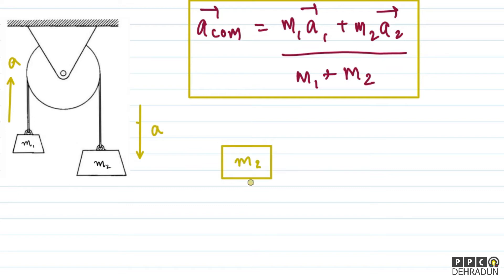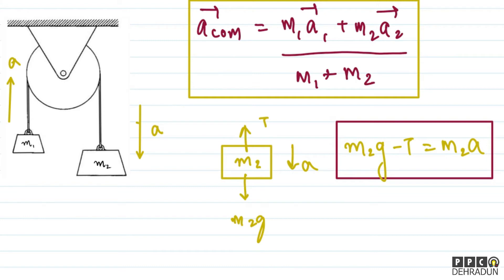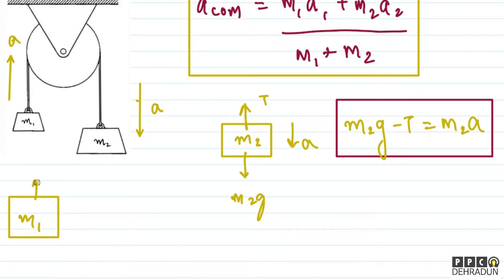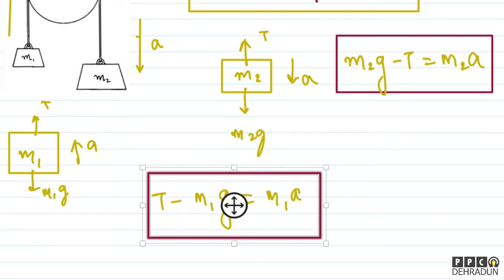First, let's draw the free body diagram. For M2, tension acts upward and M2g acts downward, and acceleration is downward. So the equation becomes: M2g minus tension is equal to M2·a. The tension throughout the thread will remain constant because there is no friction anywhere and the thread has no mass. Similarly, for M1's free body diagram, tension acts upward, M1g acts downward, and acceleration is upward. So: tension minus M1g is equal to M1·a.